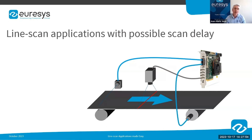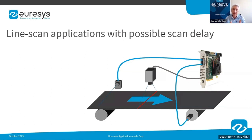The trend in line scan applications is to design systems that are as compact as possible. Due to reduced available space, it is not always possible to place sensors such as presence or proximity detectors at the same location as the line scan camera. When inspecting discrete objects, presence detectors start a new scan. If a presence detector is located upstream of the camera, it is mandatory to postpone the scan start until the object reaches the camera. Euresys frame grabbers are equipped with delay tools that introduce a delay expressed as a number of encoder ticks, ensuring speed variations are accounted for.